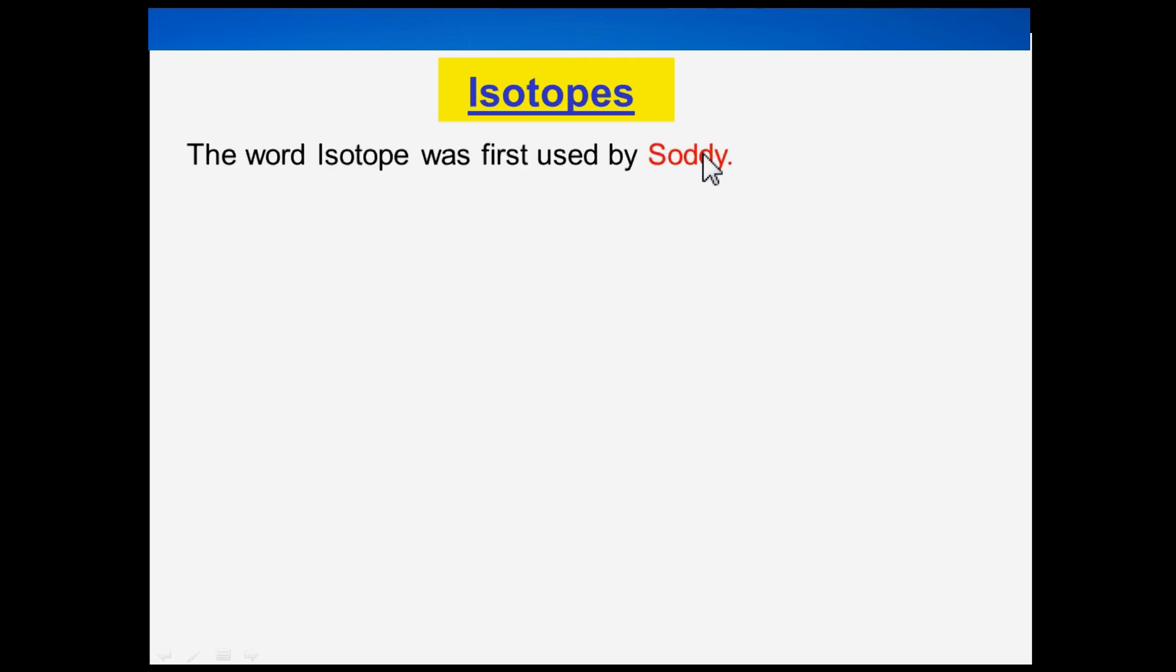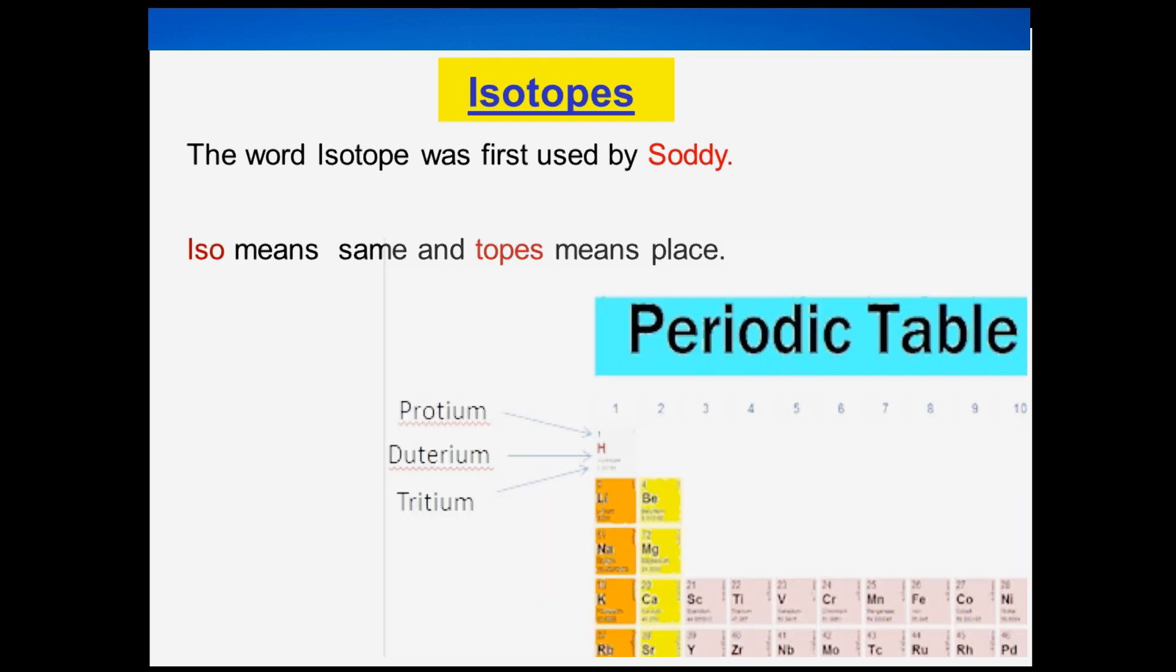The word isotope was first used by Soddy. Iso means same and topes means place. It means that all the isotopes of an element have the same place as that element in the periodic table.